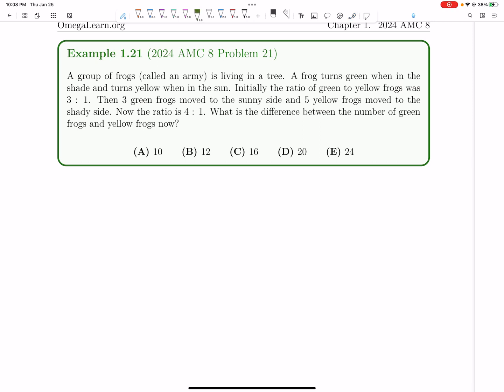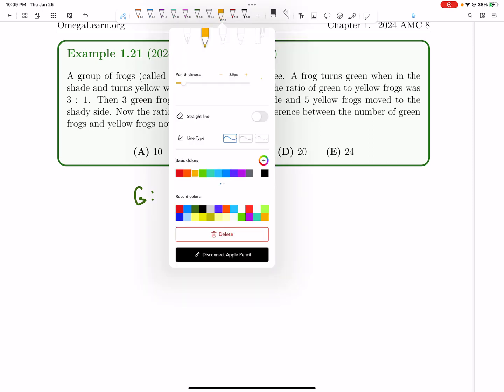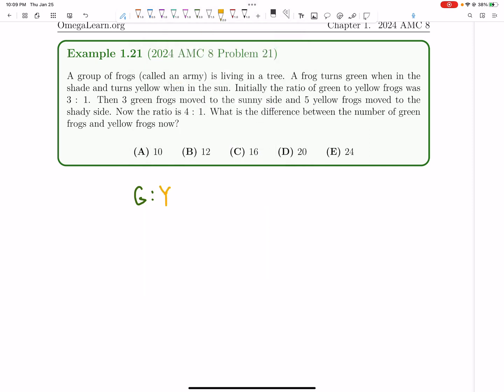Initially, the ratio of green to yellow is 3 to 1. Then three green frogs move to the sunny side, and five yellow frogs move to the shady side.